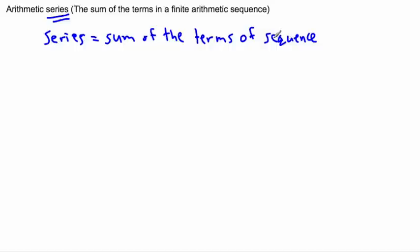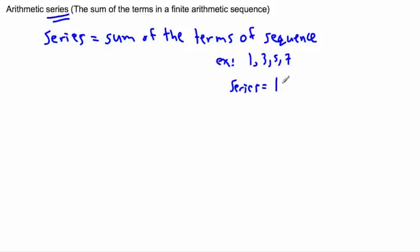Now remember what sum means — it means add them up. So an example, if I have like 1, 3, 5, 7, well the series would be 1 plus 3 plus 5 plus 7. That's what a series is. It just says add up all the terms in a sequence.